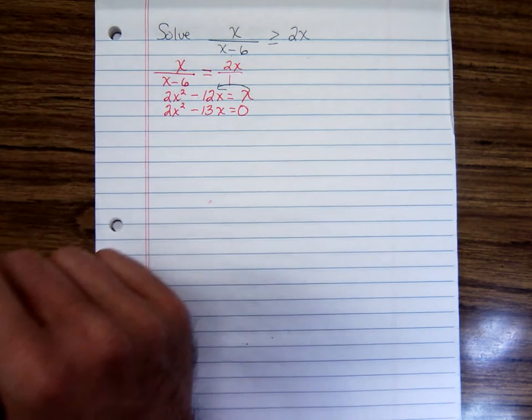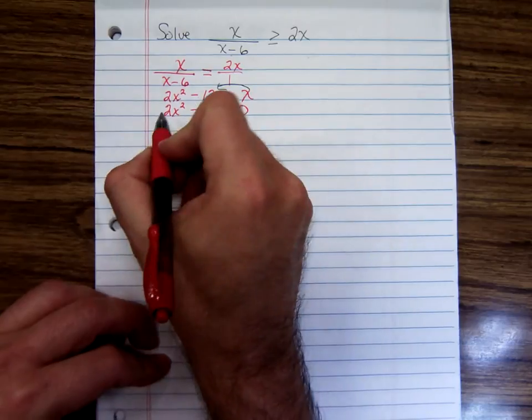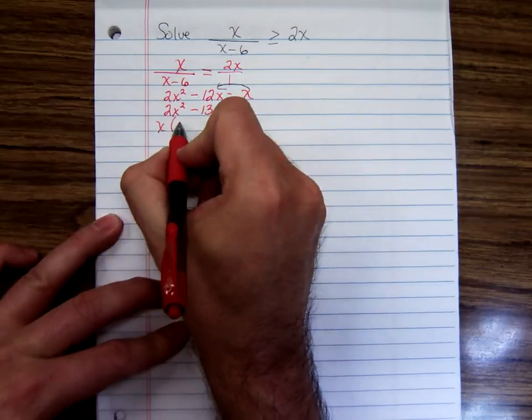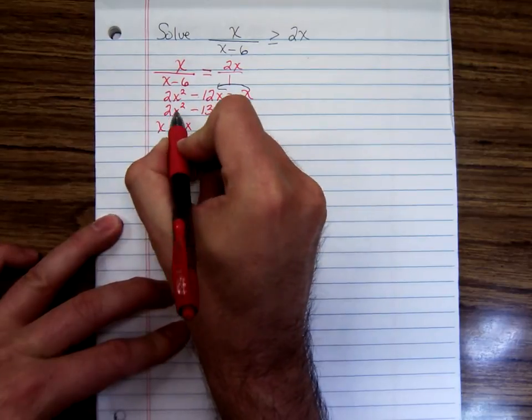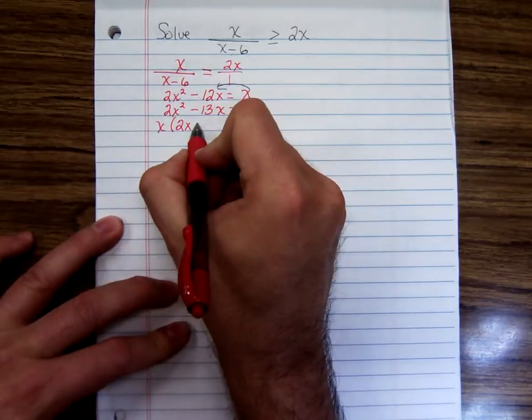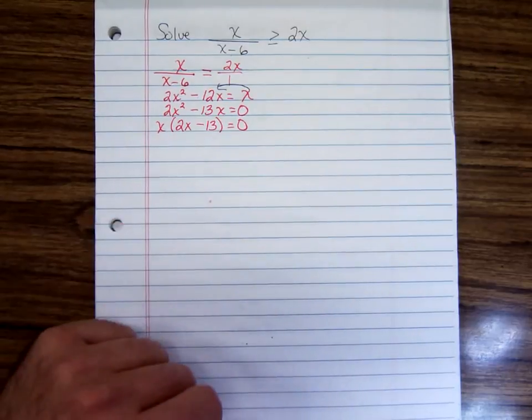And to factor this, we could just factor out a variable x from each term. So if we factor the x from each of these, x times 2x would give us the 2x squared, x times minus 13 would give us minus 13x.